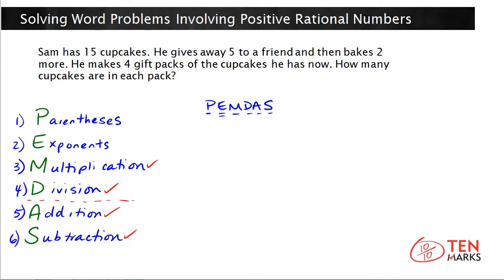Now let's solve a problem together to understand the order of operations. Sam has fifteen cupcakes. He gives away five to a friend and then bakes two more. He makes four gift packs of the cupcakes he has now. How many cupcakes are in each pack? Let's break this problem down. We want to first know how many cupcakes Sam ends up with to make gift packs with.